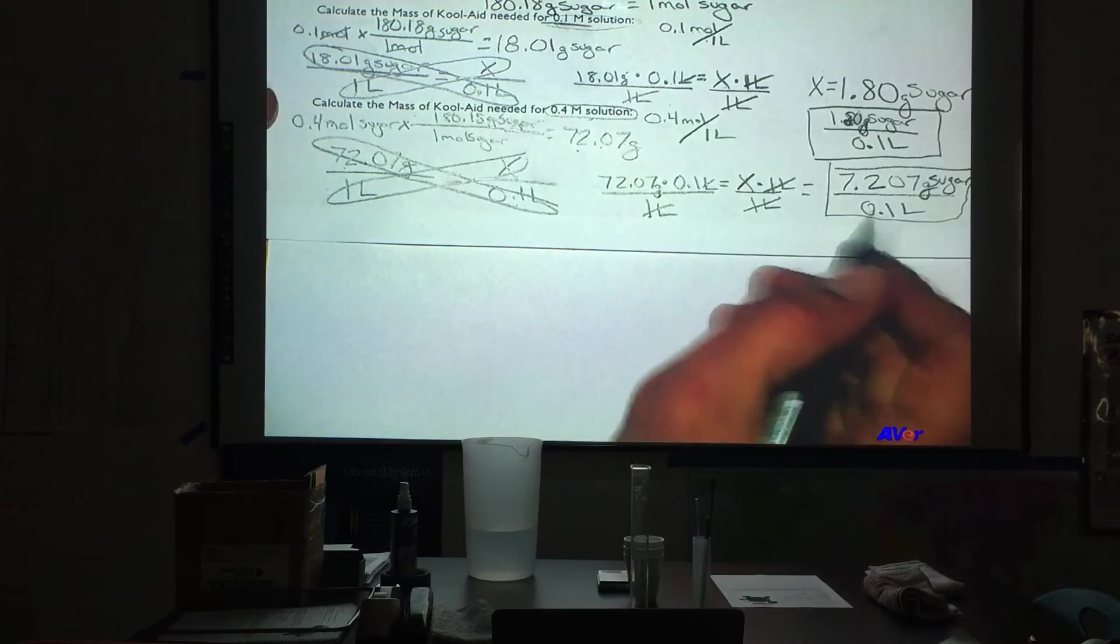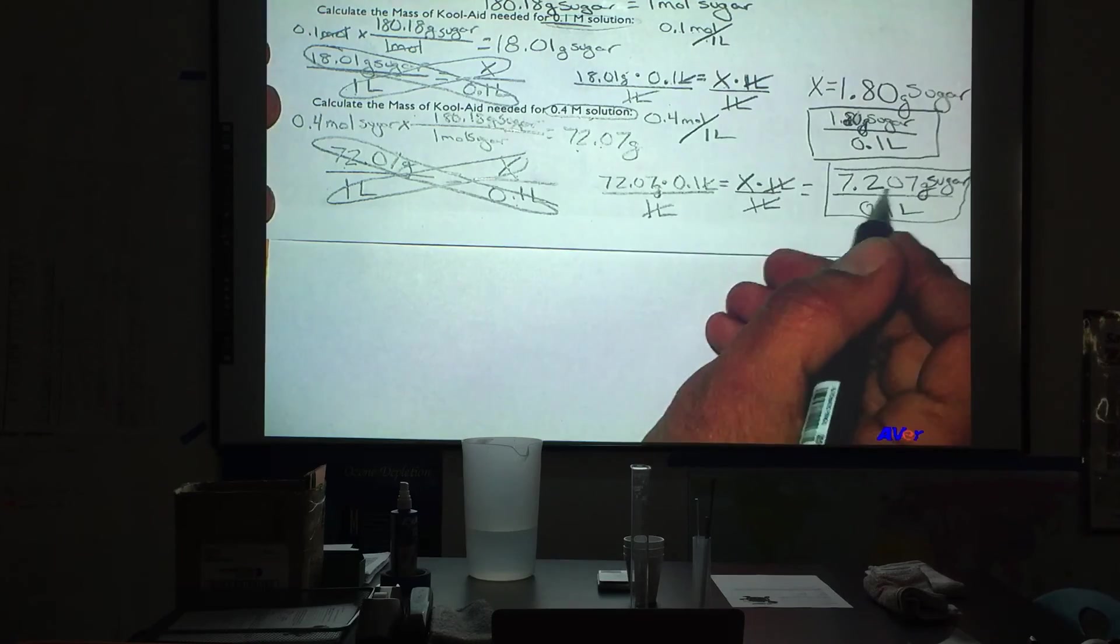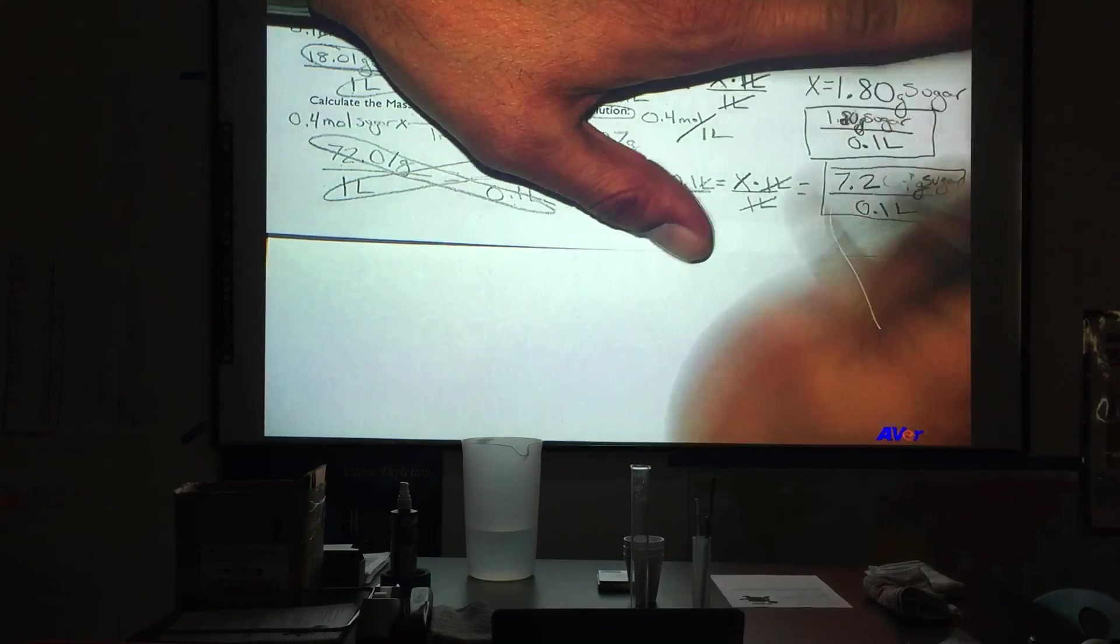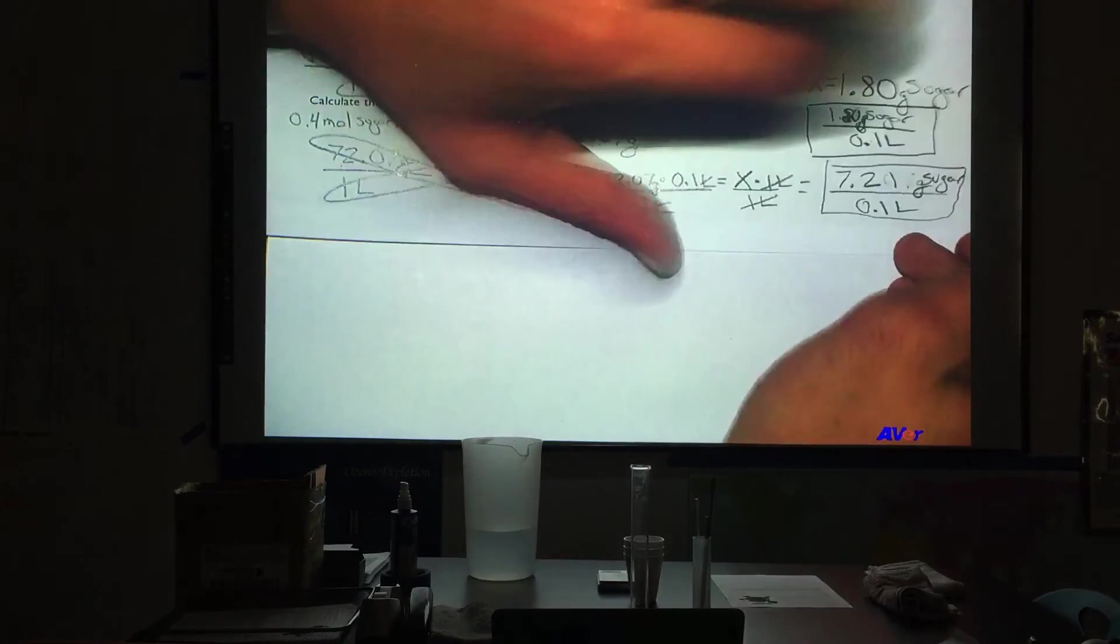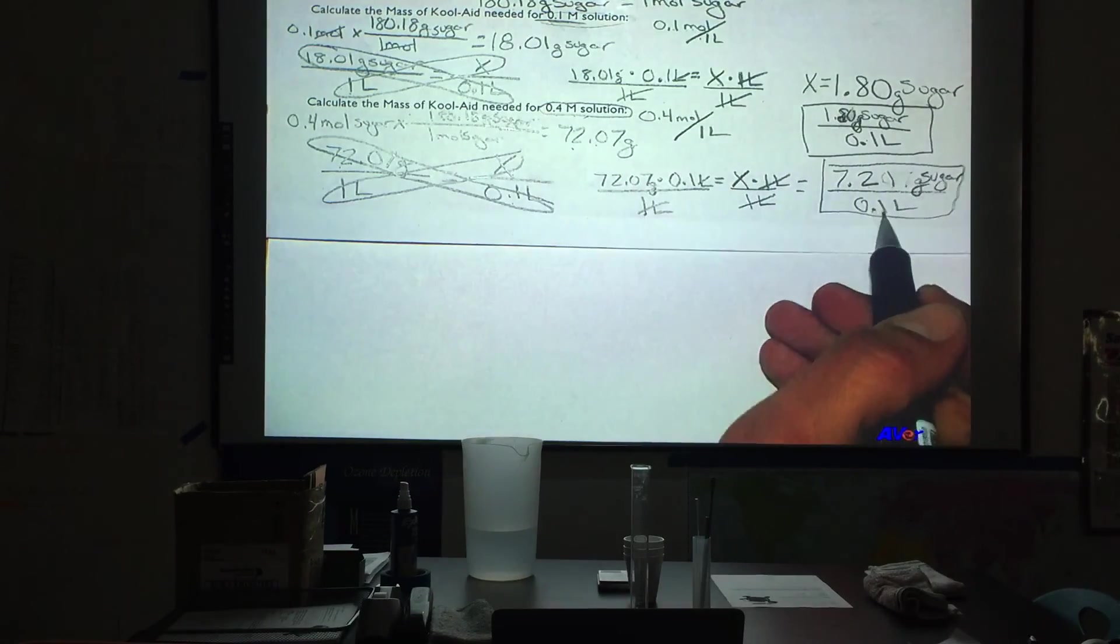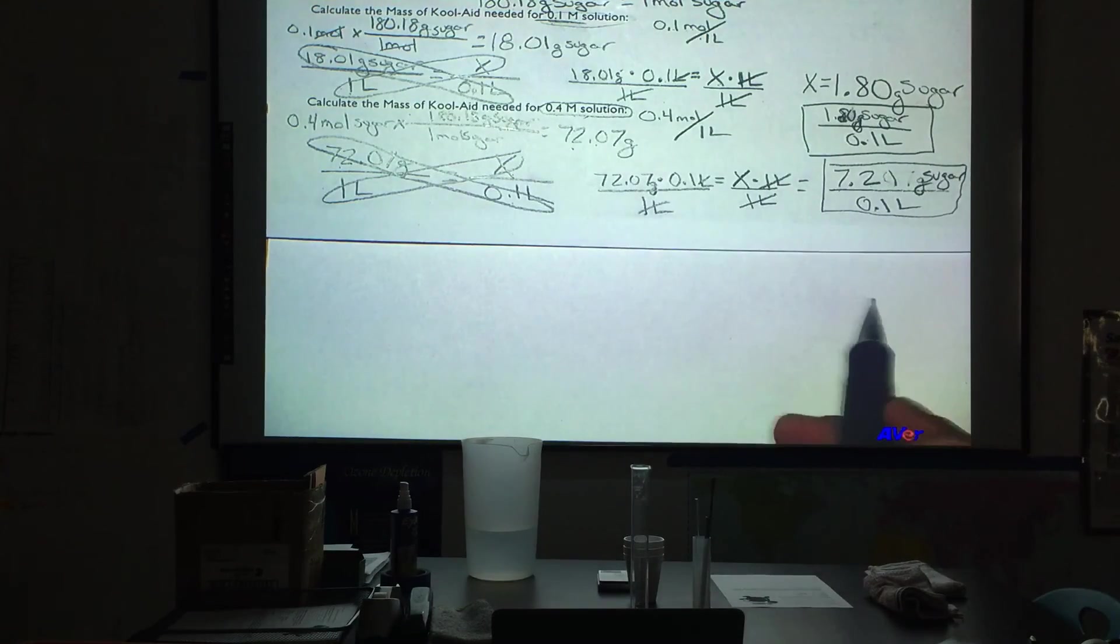Now, if our recipe here would be measuring 7.207, which we would actually call 7.21 when we rounded it to two decimal places, and in that 0.1 liter we put 7.21 grams of sugar in there.